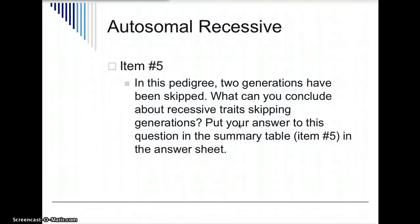Recessive traits usually skip generations because of that one dominant allele. If a person is heterozygous for a trait, they won't show the trait but they'll be carriers. So we have carriers in the pedigree that don't show the trait but do pass it along to their children.